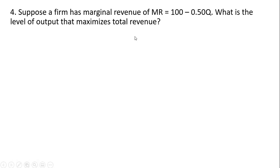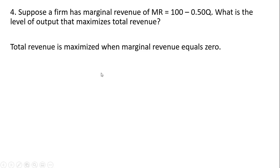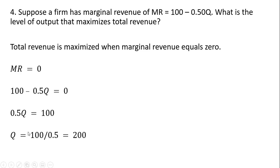Finally, in problem four: suppose the firm has marginal revenue of MR equals 100 minus 0.5Q. What is the level of output that maximizes total revenue? As stated before, total revenue is maximized when marginal revenue is 0. Setting marginal revenue equal to 0 and solving for Q, total revenue is maximized at 200 units. Okay, that's it — I hope you found this video helpful.